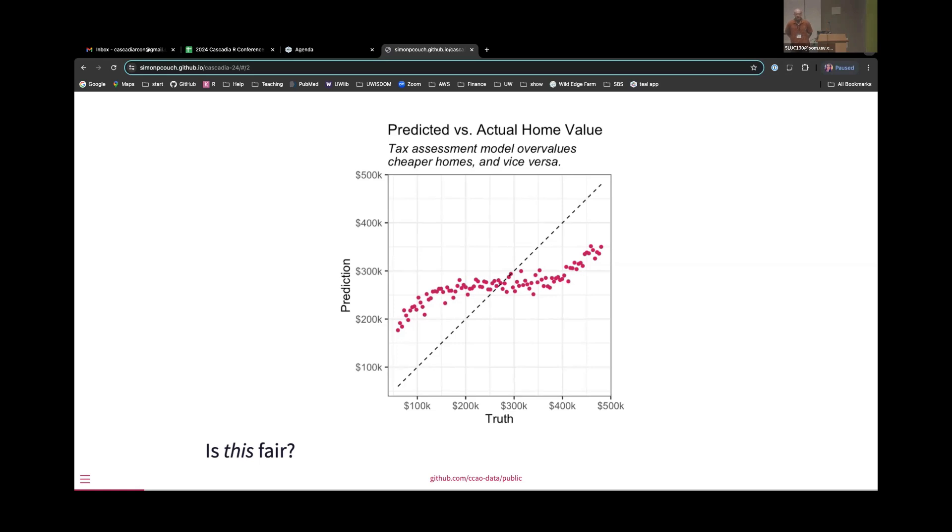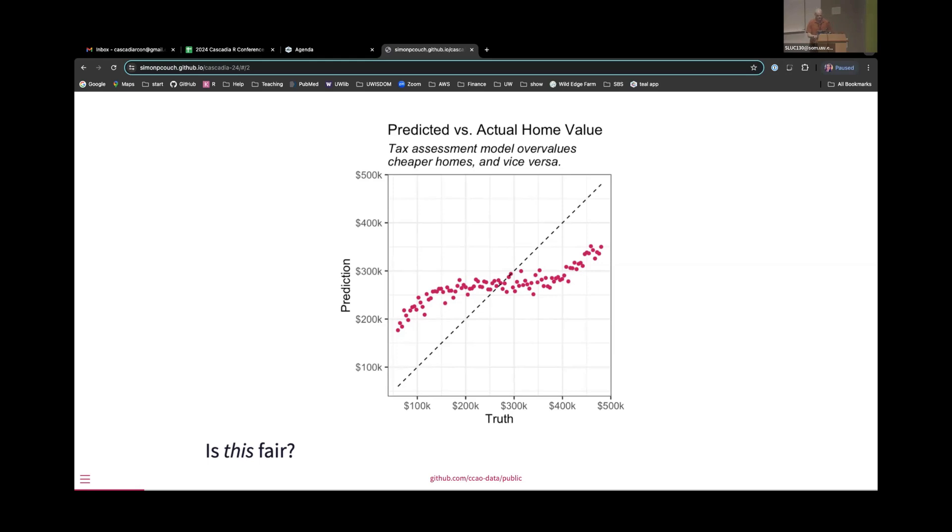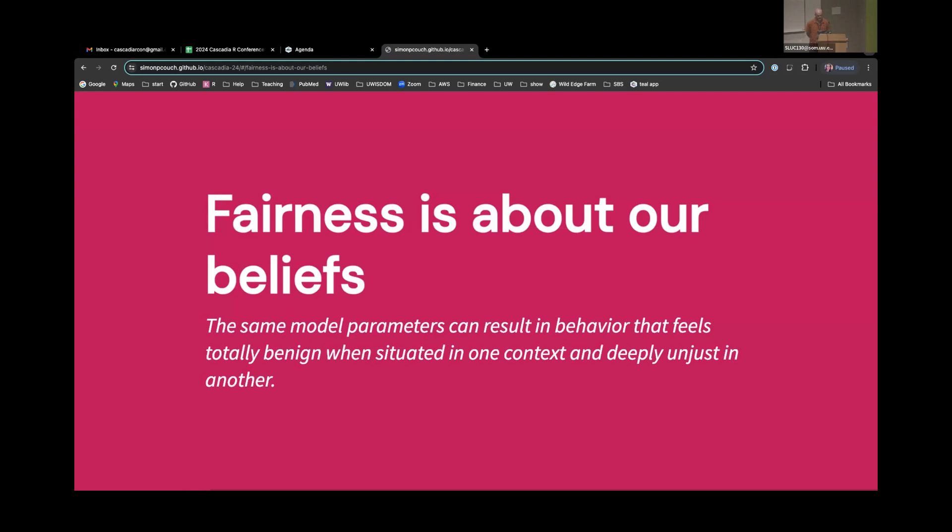I'm seeing nos, and I agree with you. We're taxing different portions of the population at different rates only because of the change in behavior of this model. So this kind of gets at the first point that I want to make in this talk, the first point of three, which is that fairness is not just about statistical behavior, and folks that are working in machine learning who are used to being able to operationalize our beliefs somewhat straightforwardly into evaluation metrics, we really need to take a step back and realize that when we're assessing models for what we believe to be fairness, we need to realize that we're coming to this evaluation task with beliefs, and those beliefs are going to translate into whether we think our model is doing well or not. So the same model parameters can result in behavior that feels totally benign when situated in one context and deeply unjust.